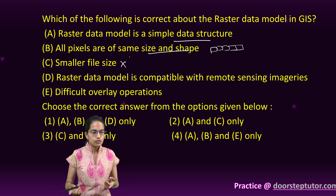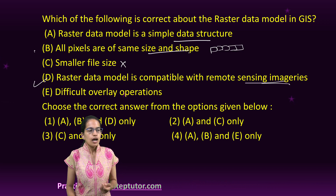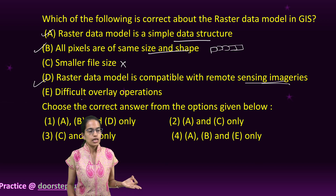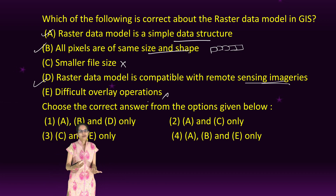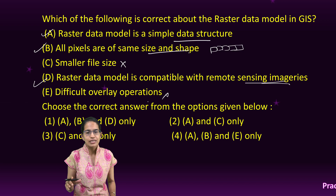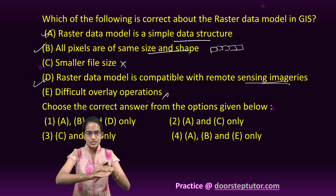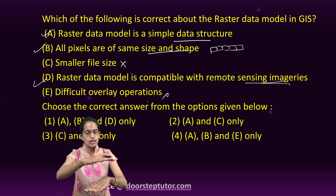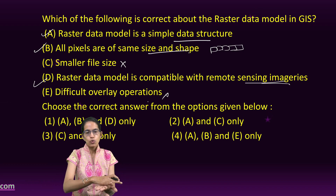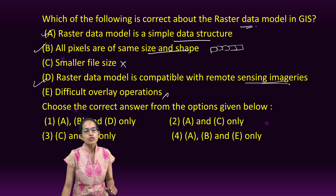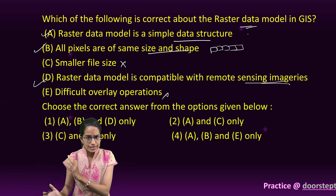The file size would be bigger for a raster image; for vector, the relative size would be smaller. Raster data is compatible with remote sensing imagery — that is correct. It does not have difficult overlay operations — that is false, because overlay operations are actually made simple using raster. You can identify certain segments such as agricultural land, forest area, and industrial areas and overlap them easily with raster data.